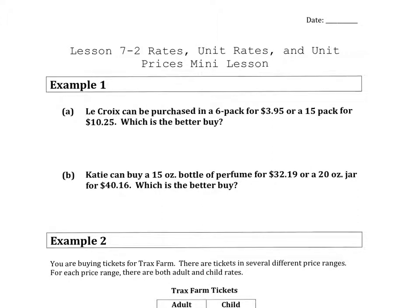In the first example, it focuses more on the first day of 7-2, where we found unit rates, unit prices, and what would be the better buy. The better buy is something cheaper per one of something.